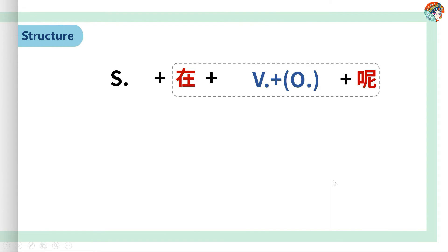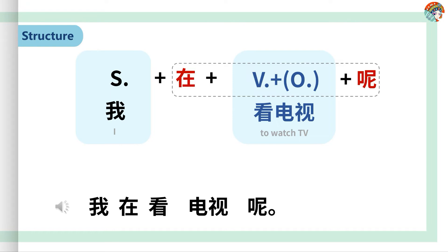The structure is like this. Here, 我 is the subject. What am I doing now? The action is 看电视. Yes, it means to watch TV. Read after me: 看电视. OK, the whole sentence is 我在看电视呢, which means I am watching TV. You can click the button, listen and repeat: 我在看电视呢.